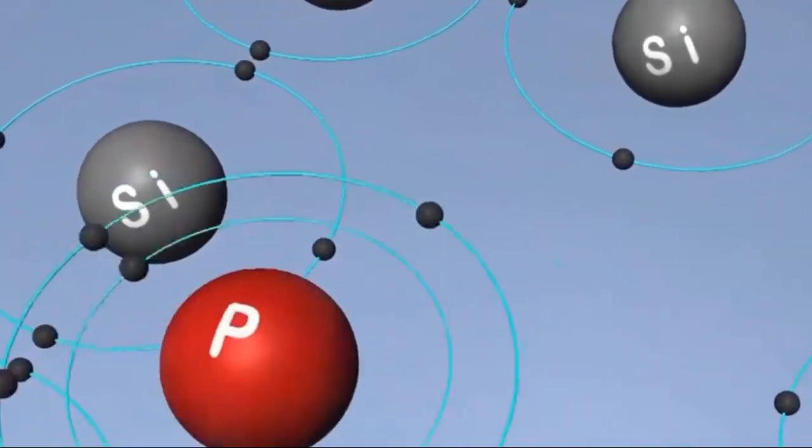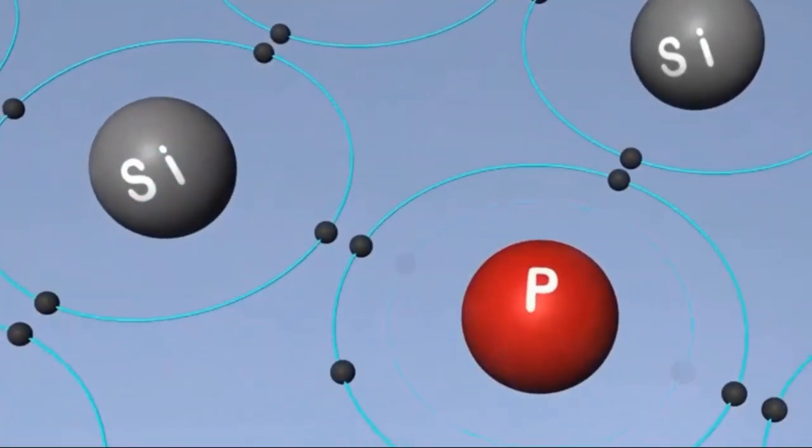Similarly, when silicon is mixed with phosphorus, as phosphorus has one more electron in its outer shell than silicon, one electron remains unbound and becomes a free electron, resulting in an excess of negative charge in the semiconductor material, giving it an N-type negative conductivity.